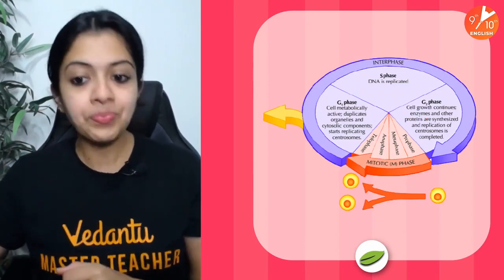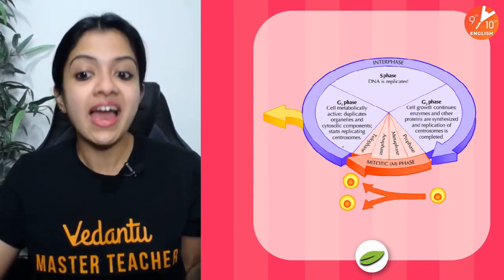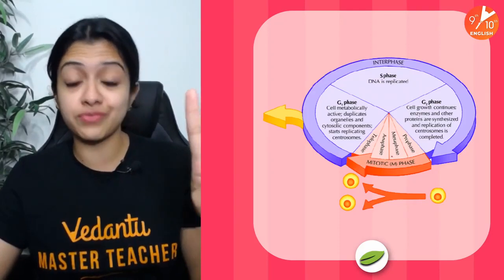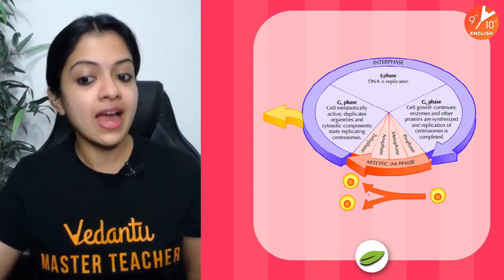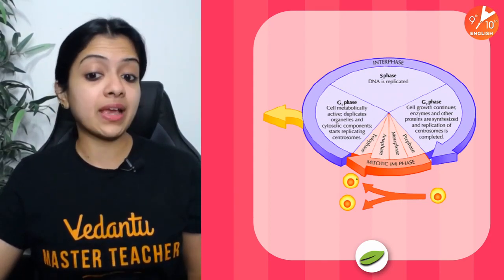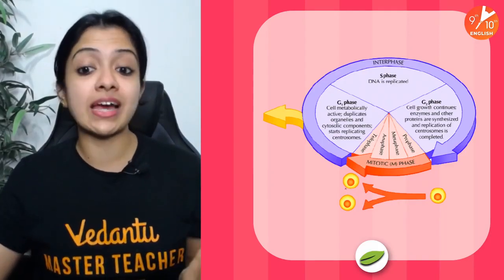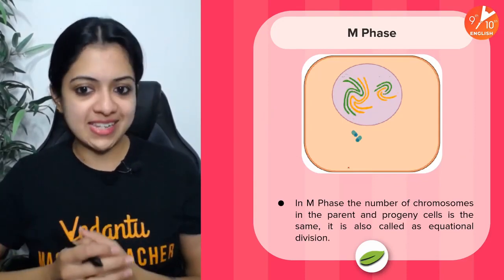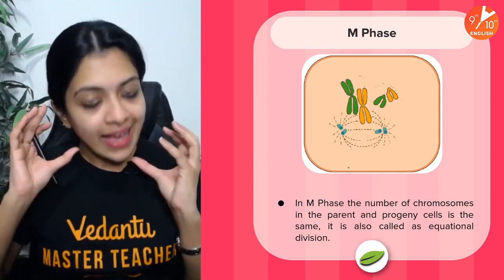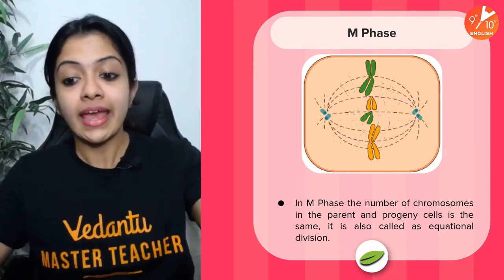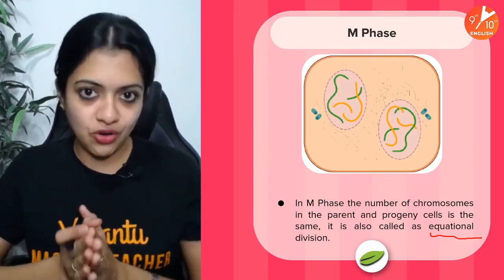Once a cell has reached G2 phase, it enters the M phase or mitotic phase, which is divided into four stages: prophase, metaphase, anaphase, and telophase. After telophase, the cell splits its cytoplasm and becomes two independent daughter cells by cytoplasmic division, or cytokinesis. The number of chromosomes in the parent cell and daughter cells would be exactly the same — this is why mitosis is also called equational division. If the parent cell has 46 chromosomes, the daughter cells also have 46.